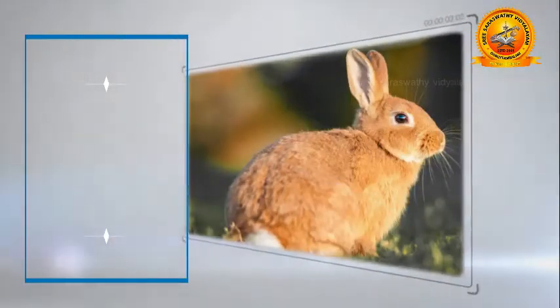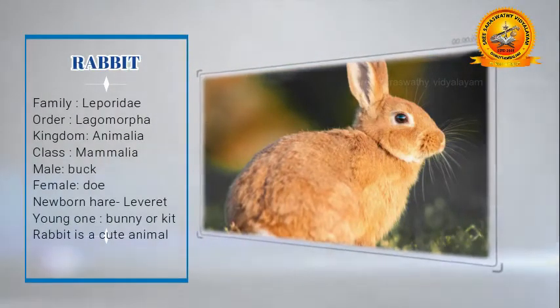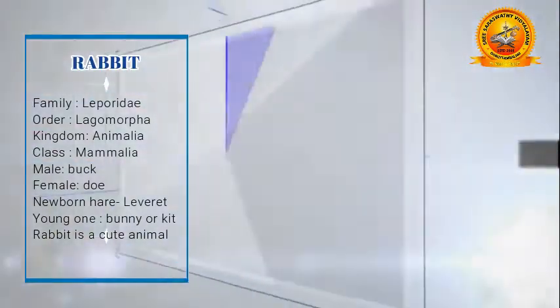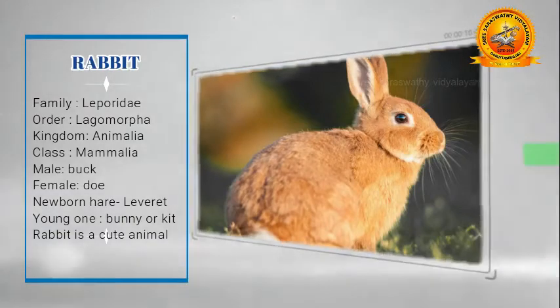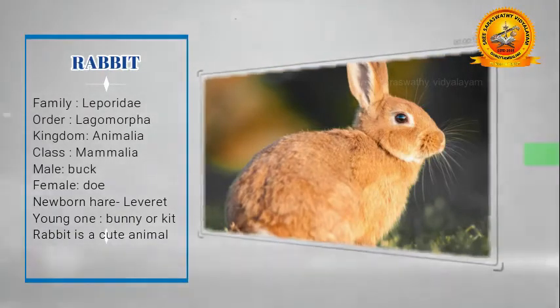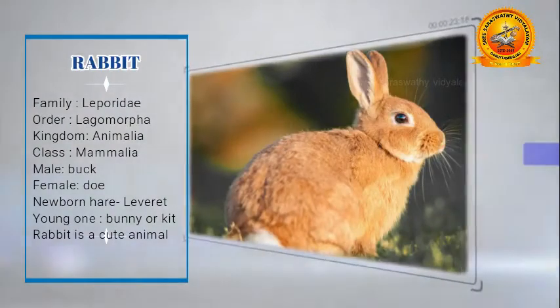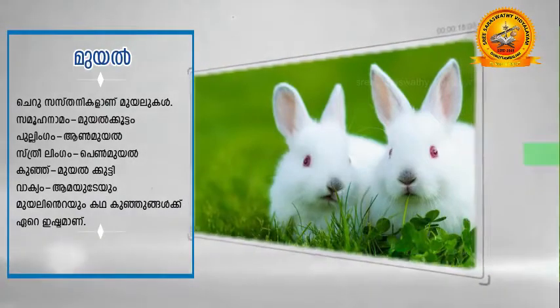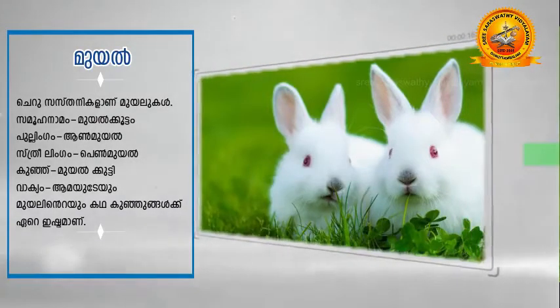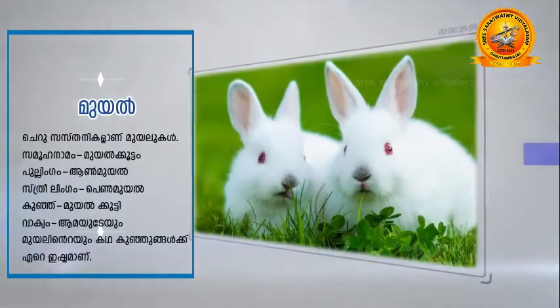Rabbit belongs to the family Leporidae, order Lagomorpha, kingdom Animalia, class Mammalia. The male rabbit is known as a buck, the female rabbit is a doe, and the young one is called a bunny or kit. Rabbit is a cute animal.